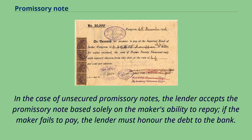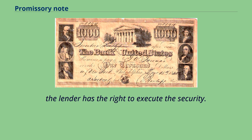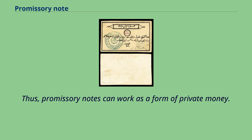In the case of unsecured promissory notes, the lender accepts the promissory note based solely on the maker's ability to repay; if the maker fails to pay, the lender must honor the debt to the bank. In the case of a secured promissory note, the note is secured by a thing of value; if the maker fails to pay and the bank reclaims payment, the lender has the right to execute the security. Thus, promissory notes can work as a form of private money.